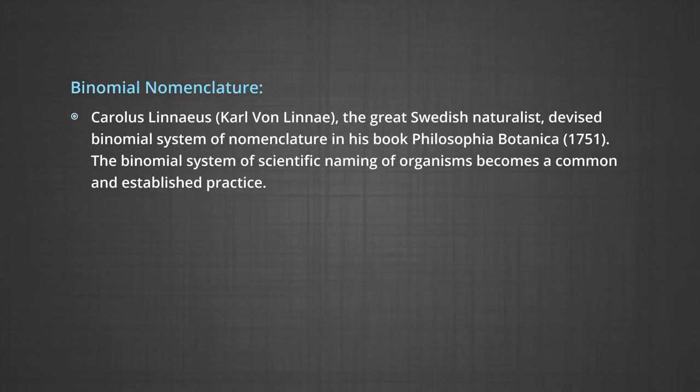Binomial nomenclature: Carlos Linnaeus, the great Swedish naturalist, devised the binomial system of nomenclature in his book Philosophia Botanica in 1751. The binomial system of scientific naming has become a common and established practice. According to binomial nomenclature, the scientific name of an organism is composed of two Latin or Latinized words. The first is called the genus or generic name, followed by the second word called the species or specific epithet. For example, the botanical name of sugarcane is Saccharum officinarum. Very rarely, the generic and specific names are the same — these are called tautonyms, for example Gorilla gorilla, Cutla cutla, Naja naja, Rattus rattus. Some organisms, fossils, and most microorganisms are known by their technical names only.